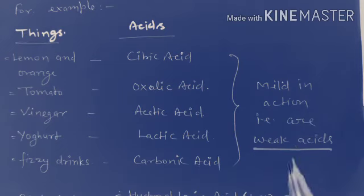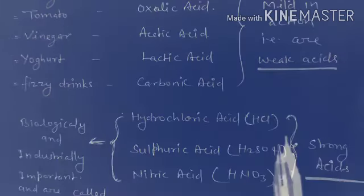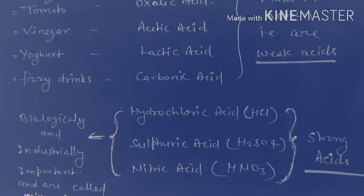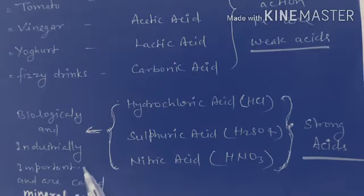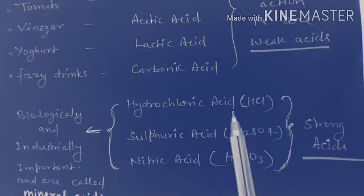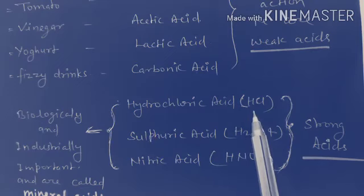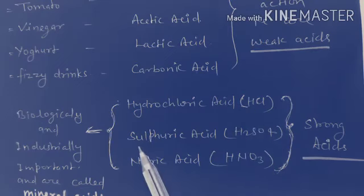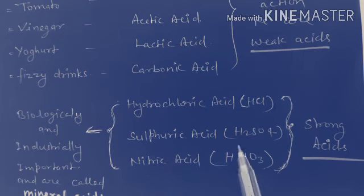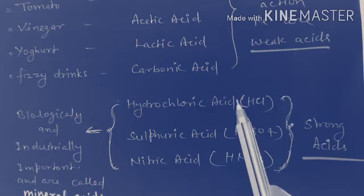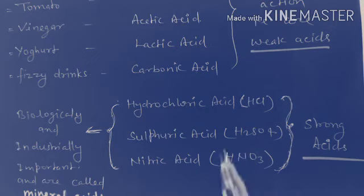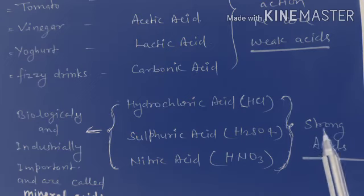There are some other acids that have biological or industrial importance, like hydrochloric acid with formula HCl, sulfuric acid with formula H2SO4, and nitric acid with formula HNO3. These acids are strong acids, they are very strong and dangerous.